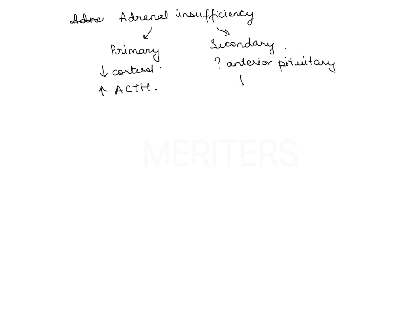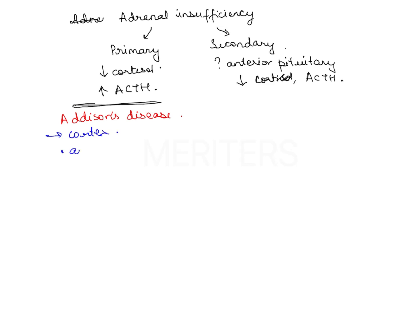In the secondary form, both cortisol and ACTH are reduced. The primary form is known as Addison's disease, or primary adrenal insufficiency. It results from destruction of the adrenal cortex due to autoimmune reaction, chronic severe infection like tuberculosis, or tumor, leading to reduction in glucocorticoid and mineralocorticoid hormones.